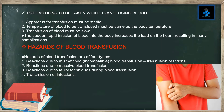The hazards of blood transfusion are of four types: number one, reactions due to mismatched or incompatible blood transfusion; number two, reactions due to massive blood transfusion; number three, reactions due to faulty techniques during blood transfusion; and number four, transmission of infection.